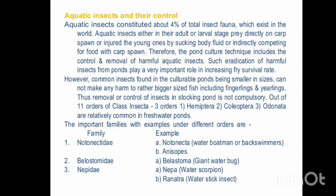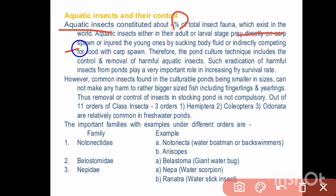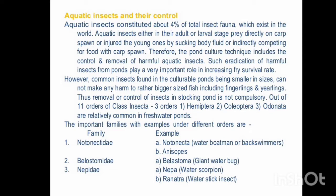Our very next topic is aquatic insects and their control. Aquatic insects constitute about 4% of total insect fauna which exist in the world. Aquatic insects, either in their adult or larval stages, prey directly on carp spawn or injure the young ones by sucking body fluid, or indirectly compete for food with the carp spawn.